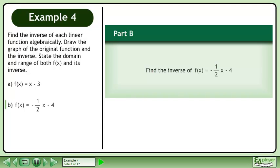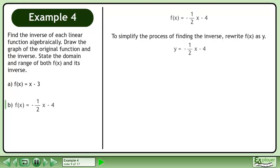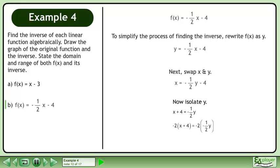In part b, we'll find the inverse of f. To simplify the process of finding the inverse, we write f as y. Next, swap x and y. Now isolate y. Multiply both sides of the equation by the denominator to cancel out the fraction on the right side. This gives us the simplified expression, and this gives us the inverse function.